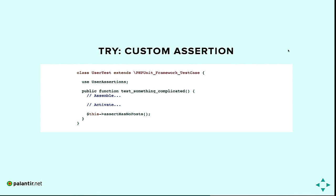Another approach for obscure tests is a custom assertion. Maybe you have a complicated class and want to test something very specific. You can write a custom assertion — don't limit yourself to only PHPUnit's assertions. For example, I have a trait called user assertions with a method called assert has no posts. The idea is to be more expressive in your assert step, making your intent clearer when reviewing many tests.